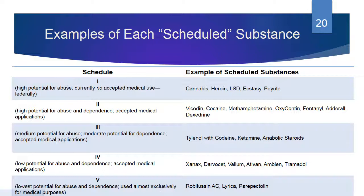Schedule 2: high potential for abuse and dependence, but with accepted medical application. Let's just take a moment and note that cannabis is considered more dangerous than meth. Schedule 3: medium potential for abuse, moderate potential for dependence, accepted medical applications — Tylenol with codeine, ketamine, and anabolic steroids. Ketamine is also now being used for patients with long-term serious depression. That was a horse tranquilizer people used in clubs — we called it Special K in the olden days.